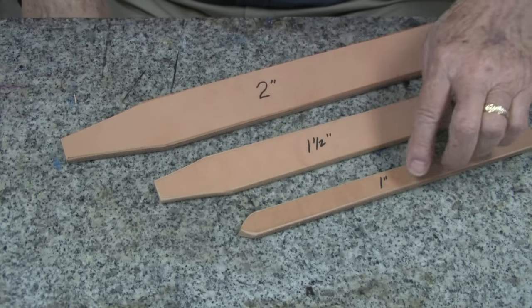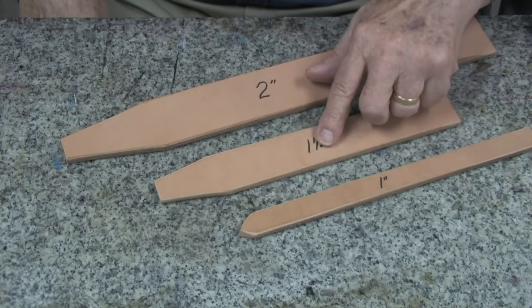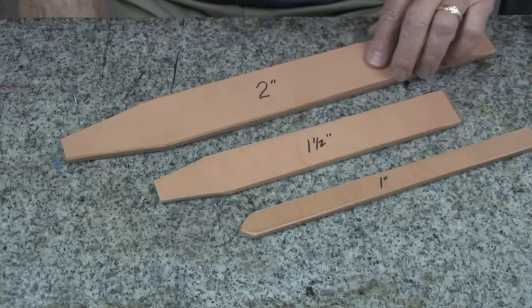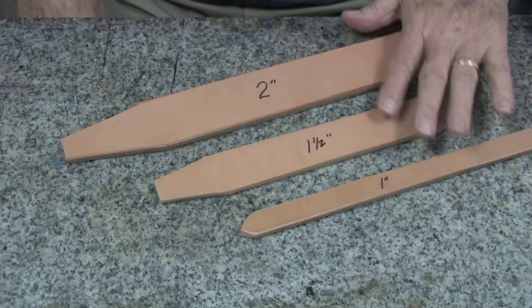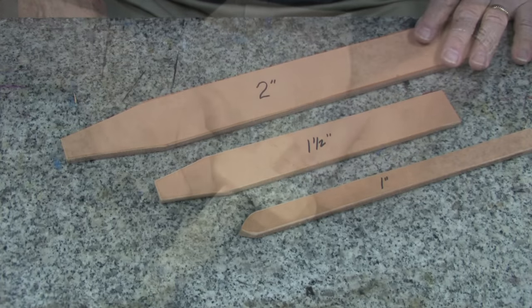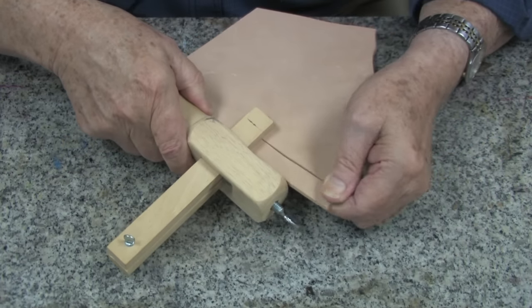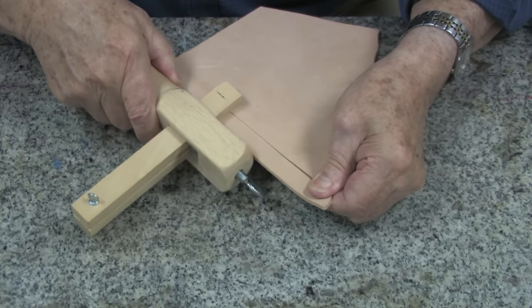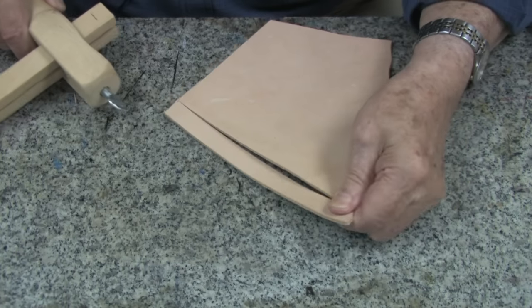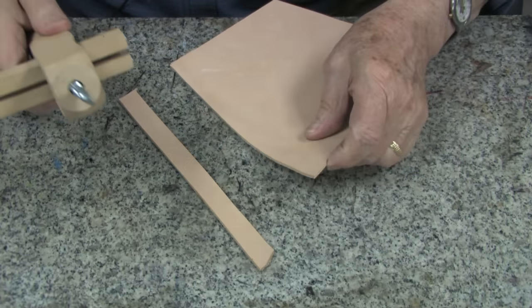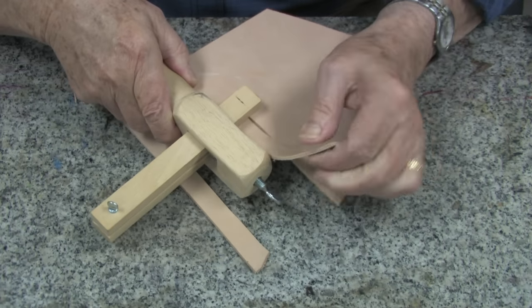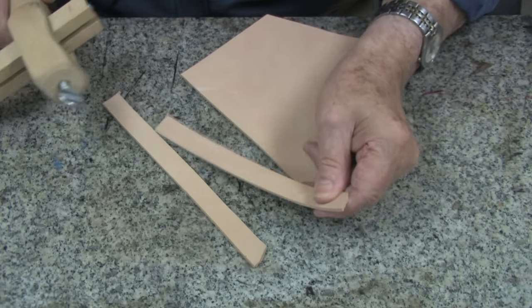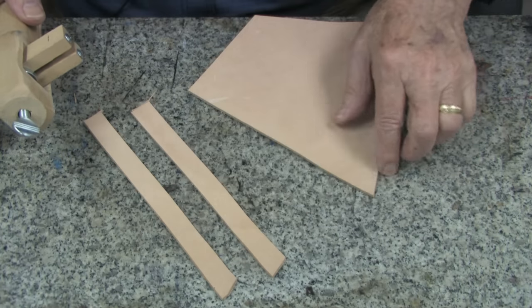And as you can see, you can make one of these forms or irons, as they're sometimes called, for all of the widths of belts that you make. To make belt keepers, it's quite easy now. Just use your strap cutter and cut straps the width that you would like.